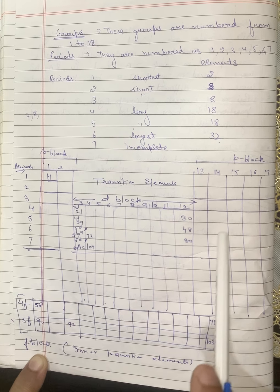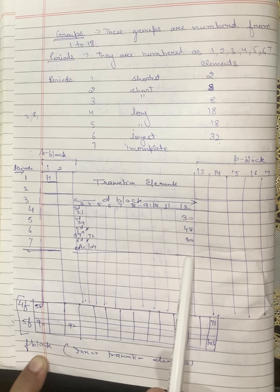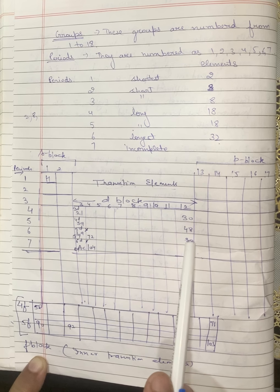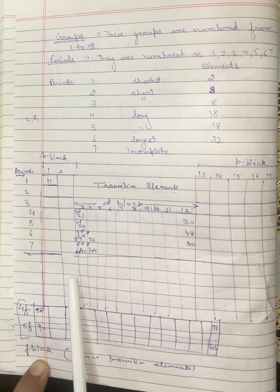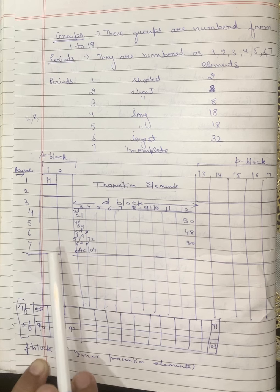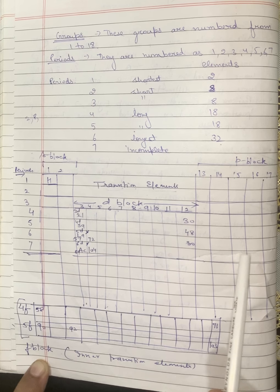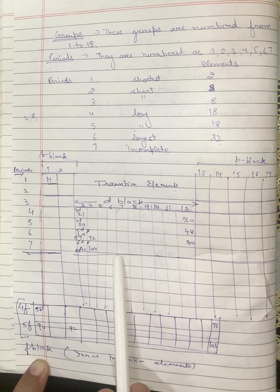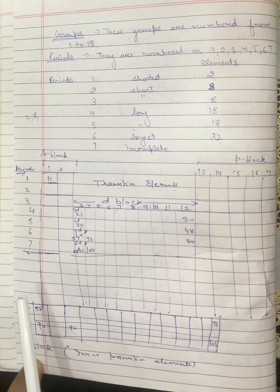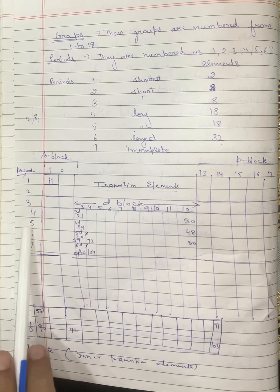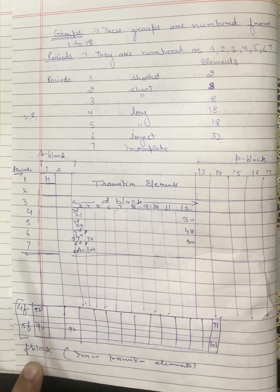The d-block consists of 10 groups, from group 3 to group 12. These are called transition elements because their properties gradually change from metallic towards non-metallic. In s and p blocks, electrons enter the ultimate (outermost) shell, but in the d-block, electrons enter the penultimate shell, i.e., the n-1 shell. The d-block begins in the 4th period after filling two electrons in the s orbital.